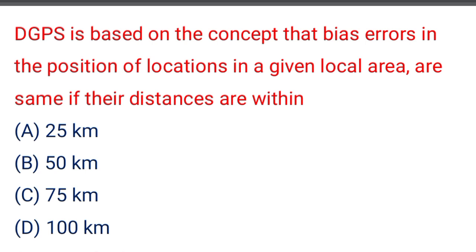Next question: DGPS is based on the concept that bias errors in the position of a location in a given local area are the same within a distance of — option A: 25 km, option B: 50 km, option C: 75 km, option D: 100 km. The correct answer is option D: 100 km.